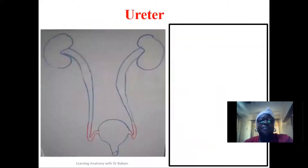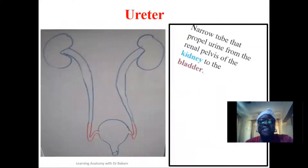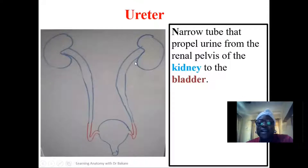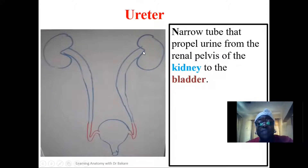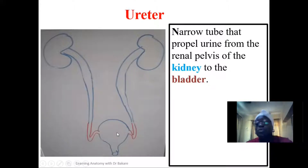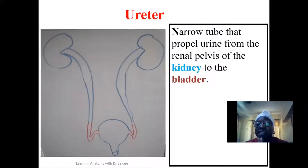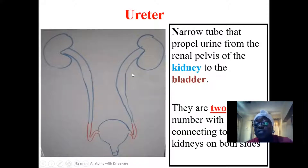Histology of the ureter. The ureter is a pipe or tube that carries urine from the kidney to the urinary bladder. It is like a tube that helps to propel or carry urine that is produced in the kidney down to the urinary bladder, where it will be stored. After it is filled up, a sensation is sent to the brain signaling the urge to urinate. The ureters are two in number — one on the right and one on the left.